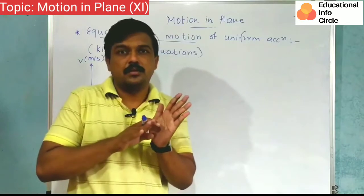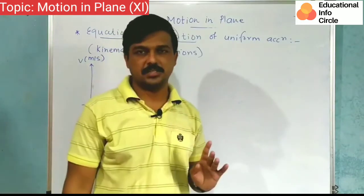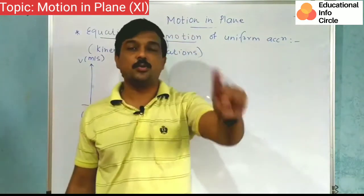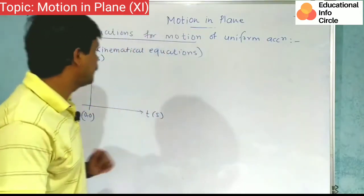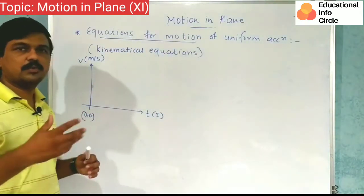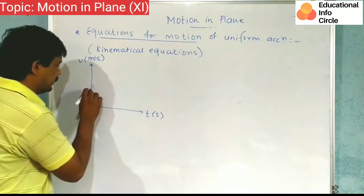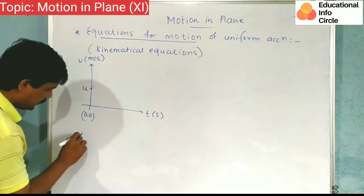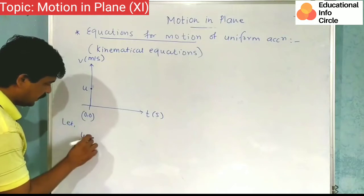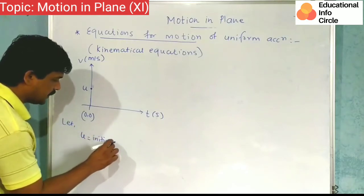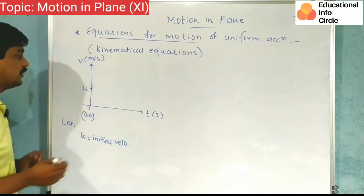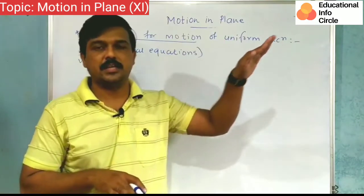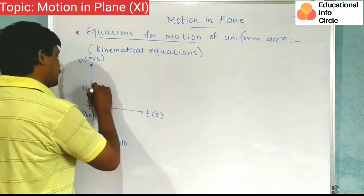We have motion with constant acceleration. Velocity is increasing in equal intervals of time, like a fan speeding up. So this is constant acceleration. These kinematical equations apply when acceleration is constant. Now at the start we consider some velocity, some initial speed. So we call it u. So u is initial velocity.